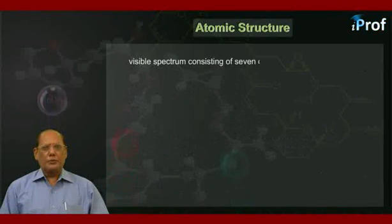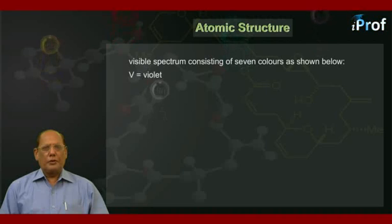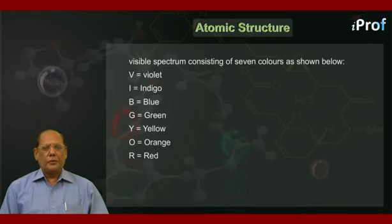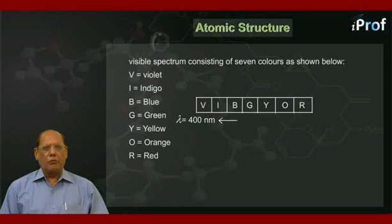This is called visible spectrum consisting of seven colors as shown below. The colors are V for violet, I for indigo, B for blue, G for green, Y for yellow, O for orange and finally R for red. This ranges from lambda equal to 400 nanometer at the violet end and 700 nanometer at the red end.